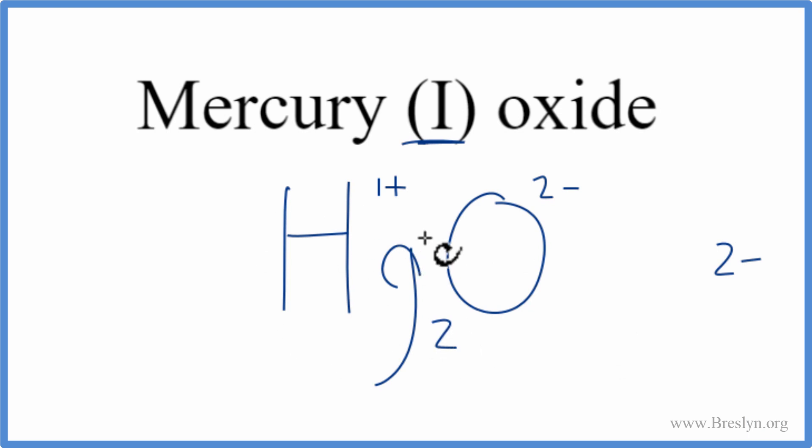Two mercury - two times the one plus, that's two plus. So two plus, two minus, that adds up to zero. This is the correct formula for mercury(I) oxide.